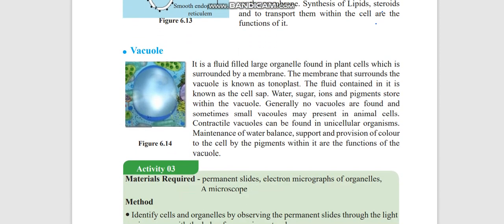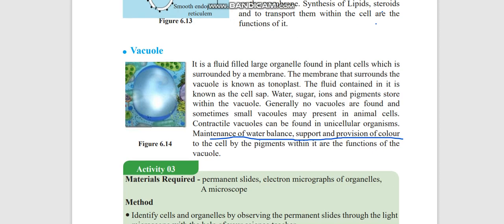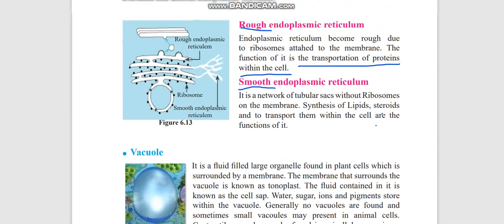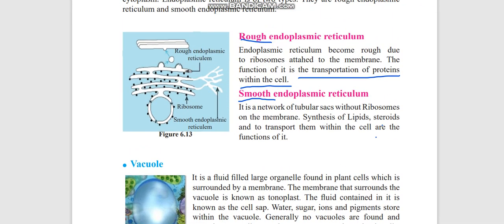Next one is the vacuole. Vacuole is present only in the plant cell at the center. Inside fluid we call cell sap, the membrane of it is tonoplast. Together we call it a vacuole. Water, sugar, ions, and pigments are stored in the vacuole. Maintenance of water balance, support, and provision of color to the cell by the pigments are the important functions of the vacuole. These organelles we should know whether they are membrane-bounded or not and their functions should be specifically studied.